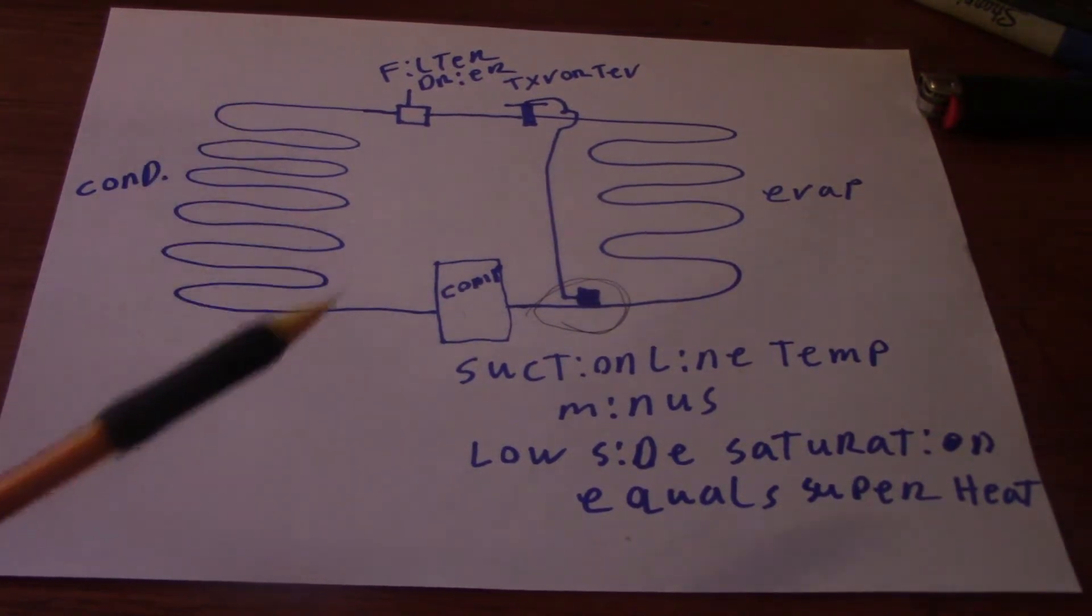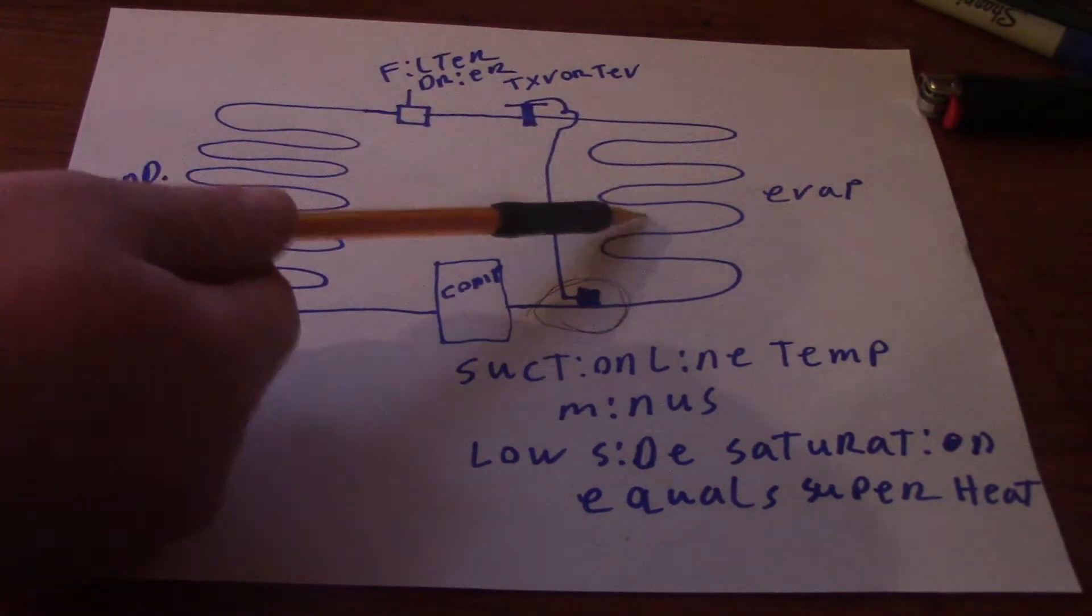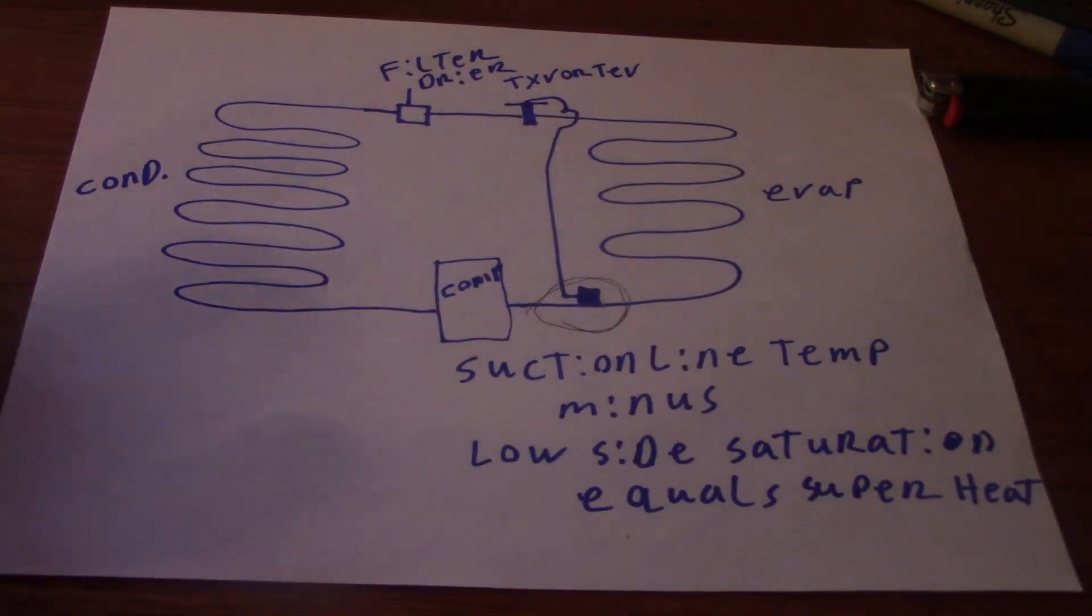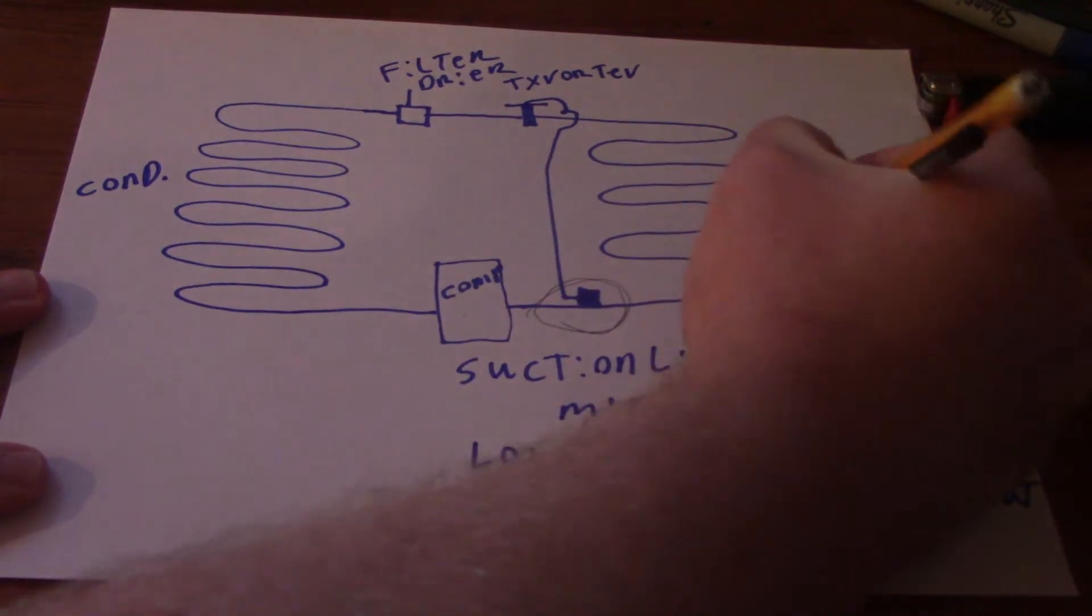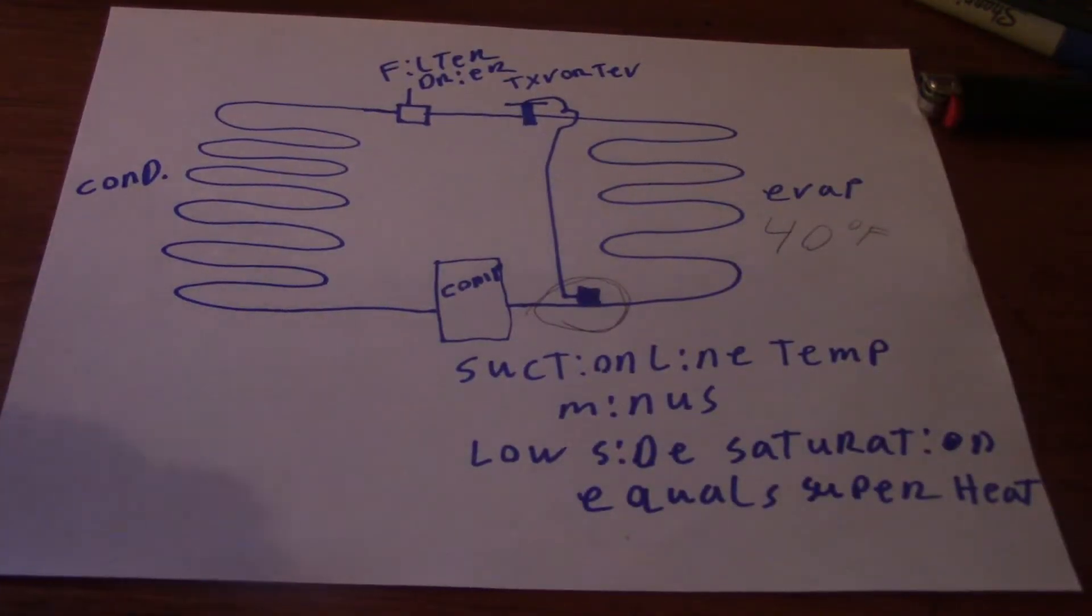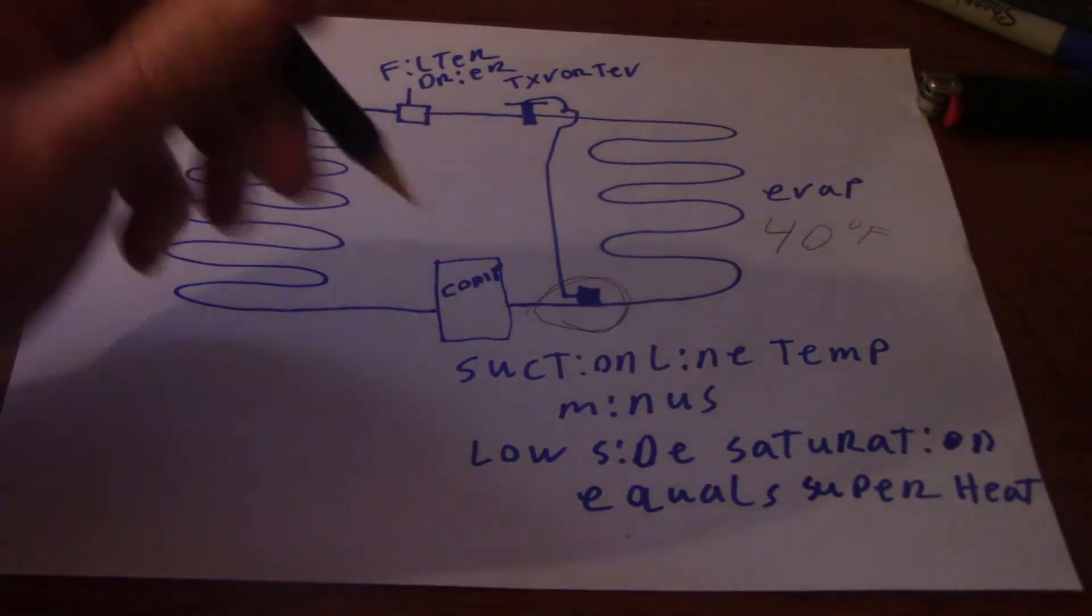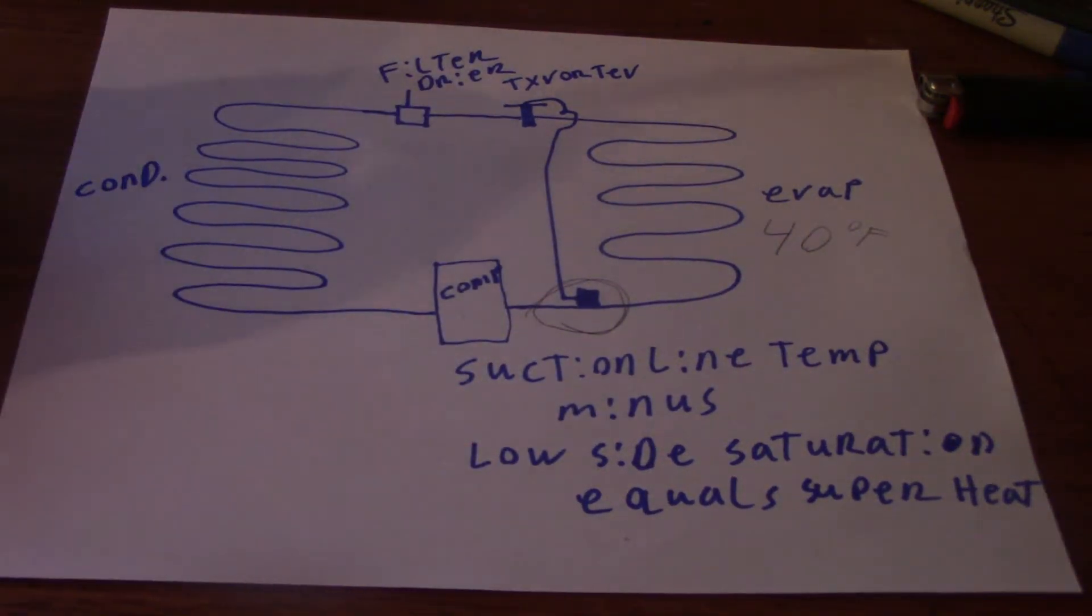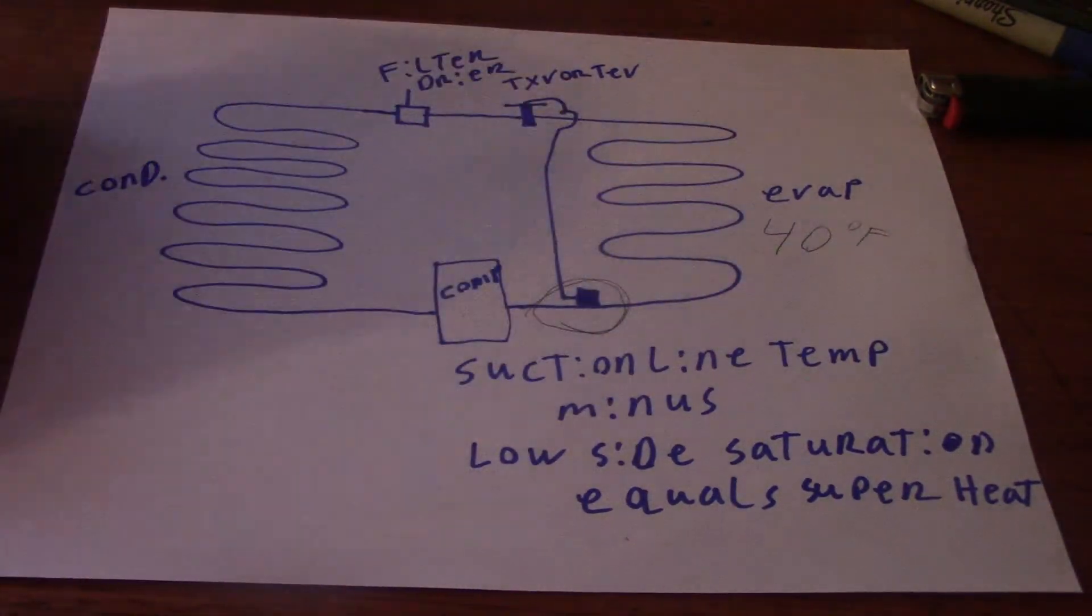All we're doing is checking if the evaporator here, we're going to pick, we'll say air conditioner. It boils off at 40 degrees Fahrenheit. That's going to be what's called the saturation temperature. You get that by taking your gauge, you hook it to the low side of the system. If it was R22, let's say 70 PSIG, 69, 70, you'd be looking at a 40 degree evaporator.